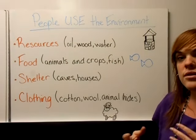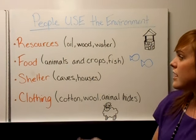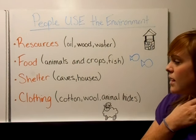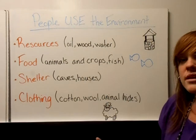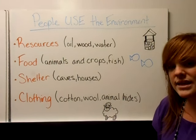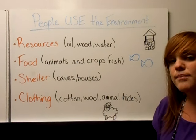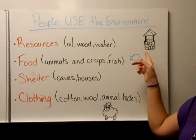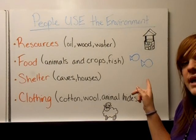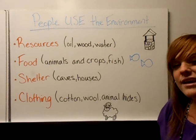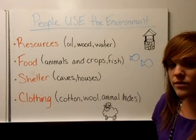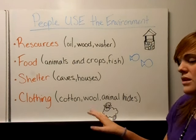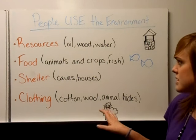The next way that people interact with the environment is that they use it. They use it for the resources that are there, the food that's there, the shelter that's available, and the clothing — using supplies from the area. Now that imports and exports are so common you don't necessarily have to use local resources, but some people still do. We have a well for water, fish if you live near water, and a sheep to represent wool — a resource many people use for clothing.